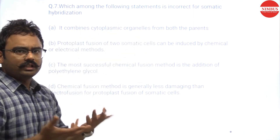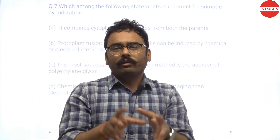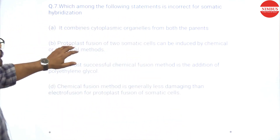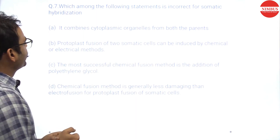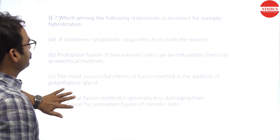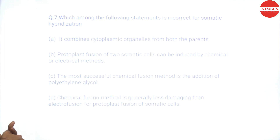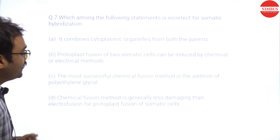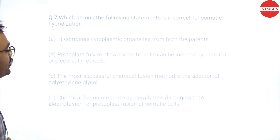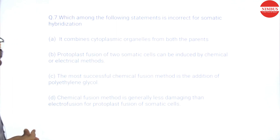The question asks what is NOT correct about somatic hybridization. First: it combines cytoplasmic organelles from both parents — correct. Second: protoplasmic fusion can be induced by chemical and electrical methods — correct. Third: the most successful chemical fusion method is polyethylene glycol — correct. Fourth: chemical fusion is generally less damaging than electrofusion — wrong, because chemical fusion is MORE damaging than electrofusion. So D is the incorrect statement. D is the answer.